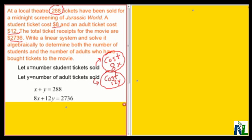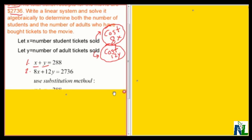So I have two equations and two variables. Equation 1: X plus Y equals 288. Equation 2: 8X plus 12Y equals $2,736. I could use either the elimination method or the substitution method to solve this system. Since the coefficients of the variables in the first equation are 1, I'm going to use the substitution method, focusing first on equation 1.